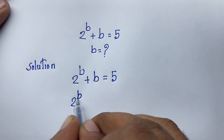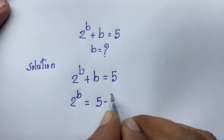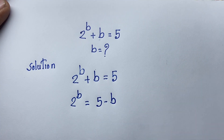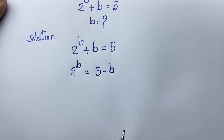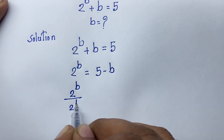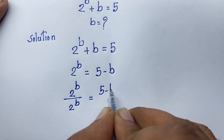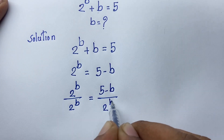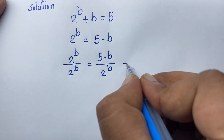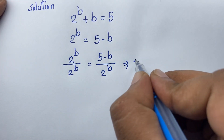2 to the power b is equal to 5 minus b — I just moved this b to this side, so it will be negative b. Now at this moment I divide both sides by 2 to the power b, so you can see: (5 minus b) over 2 to the power b. This expression 2 to the power b divided by 2 to the power b will be 1.